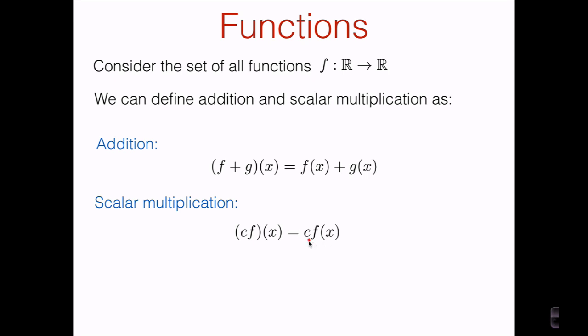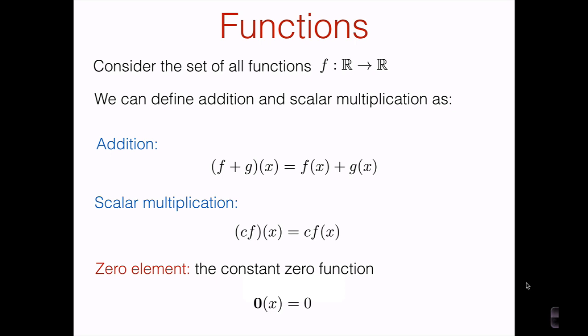So f(x) here is just some real number — we multiply that real number by c, and that's what c times f evaluates to on input x. Let's point out the zero element in the vector space of real-valued functions. That's just going to be the constant zero function — the function that for every input x evaluates to zero. Under our definition of addition, for any function f, f plus the constant zero function is equal to f itself.